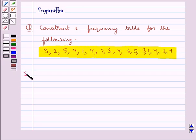Let's move on to the solution now. The observations are 3, 2, 5, 4, 1, 4, 2, 3, 4, 6, 5, 3, 1, 4, 2, 4.